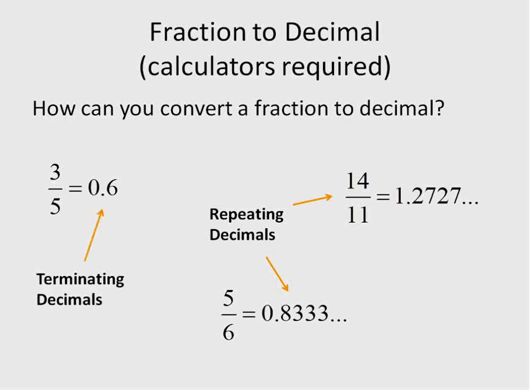When the decimals repeat indefinitely, we call them a repeating decimal. When the decimals terminate or end, like 0.6, that's all there is to it. There's nothing beyond that. That's called a terminating decimal. Both terminating and repeating decimals are types of rational numbers. These numbers can be written as a fraction.